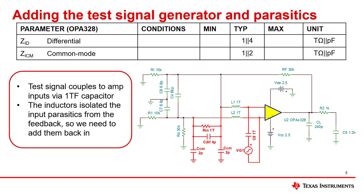This can be done by replicating the input impedance network and connecting it to the feedback network. This is shown in the example in red. The values of these parasitics are given in the amplifier data sheet under the common mode and differential impedance section.